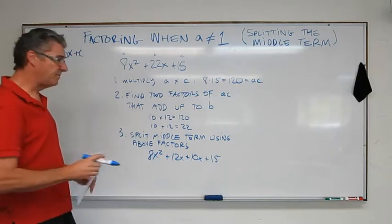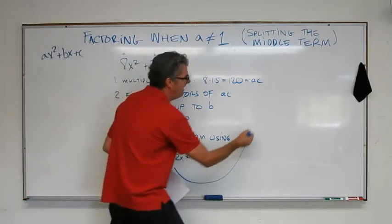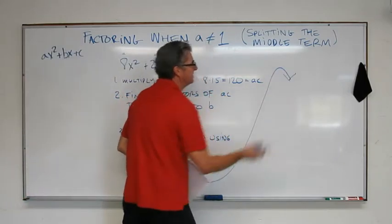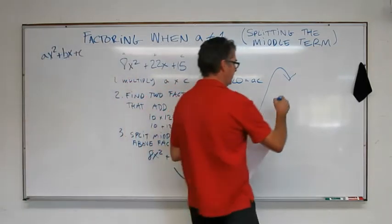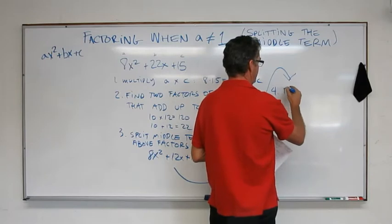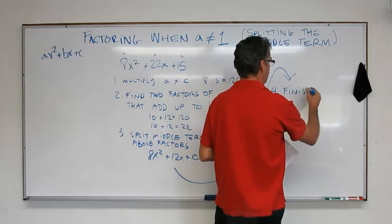I'm running out of room. I'm going to do my little arrow and finish right there. Okay? All right. So step four. Finish factoring.